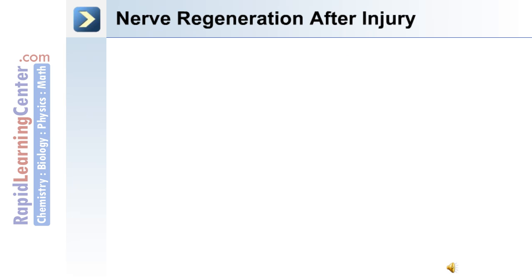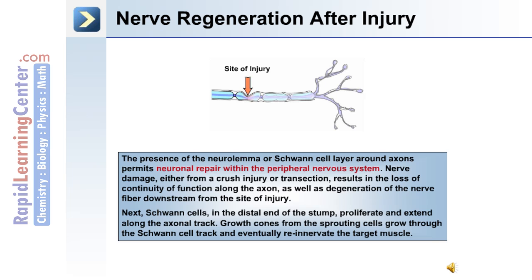The nervous system has a certain capacity for repair after injury. The presence of the neurolemma or Schwann cell layer around the axon permits neuronal repair within the peripheral nervous system. Nerve damage from a crush injury or transection results in loss of continuity of function along the axon and degeneration of the nerve fiber downstream from the site of injury. After this, Schwann cells in the distal end of the stump proliferate and extend along the axonal tract. Growth cones from the sprouting cells grow through the Schwann cell tract and eventually re-innervate the target muscle.